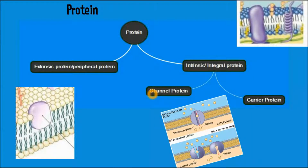Intrinsic proteins can be divided into two types: channel proteins and carrier proteins. Channel proteins have pores that allow molecules — including those not soluble in the phospholipid bilayer — to enter the cell. Carrier proteins have a binding site; like a lock and key, if the specific molecule binds to the site, the carrier protein flips and allows the molecule to enter the cell.